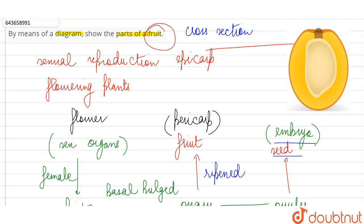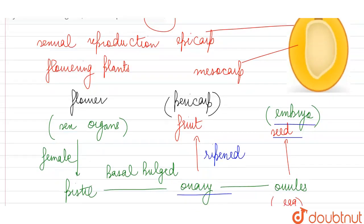Then the layer inner to the epicarp is called the mesocarp. In case of the mango fruit, it is fleshy. So the pulp of the mango, the juicy part that we eat, is actually the mesocarp layer. And finally, we have the endocarp.